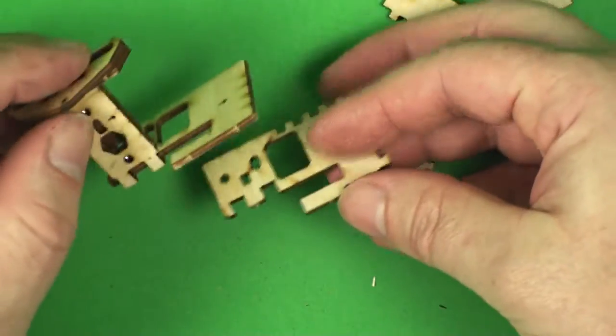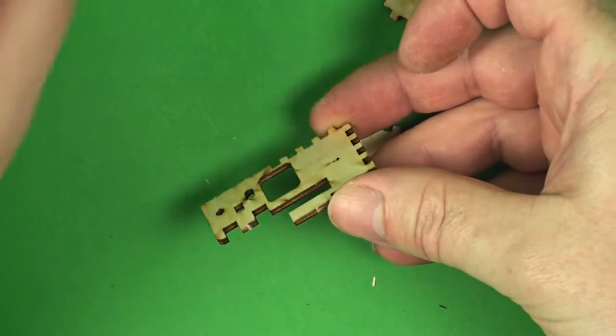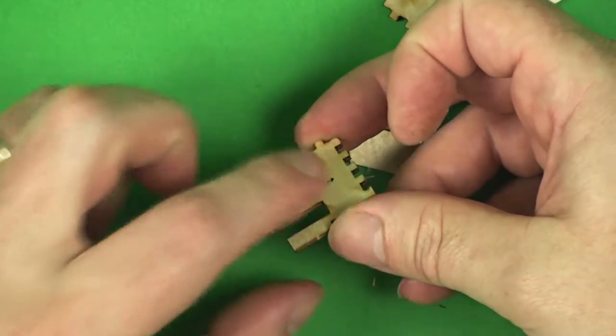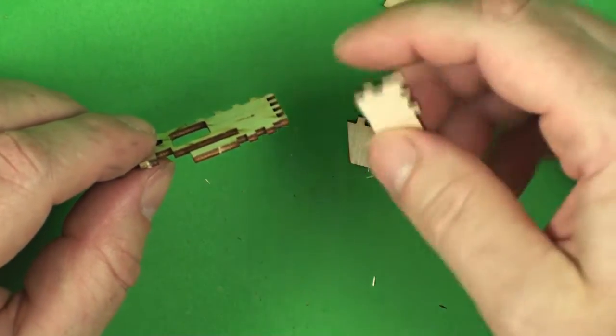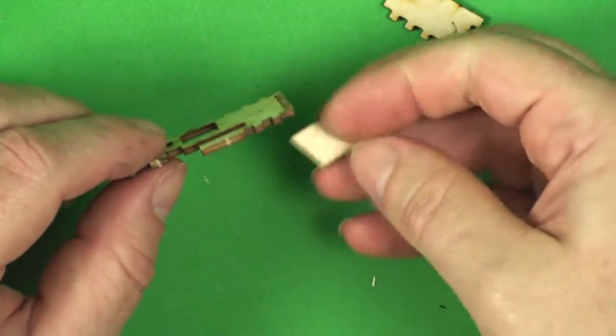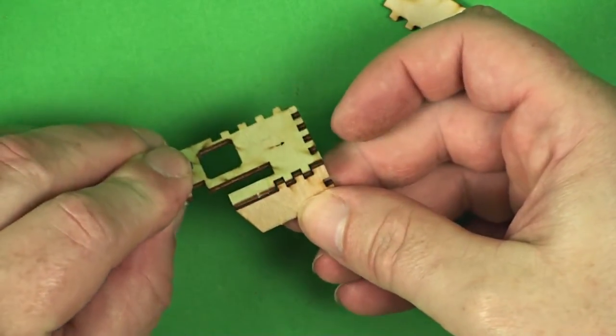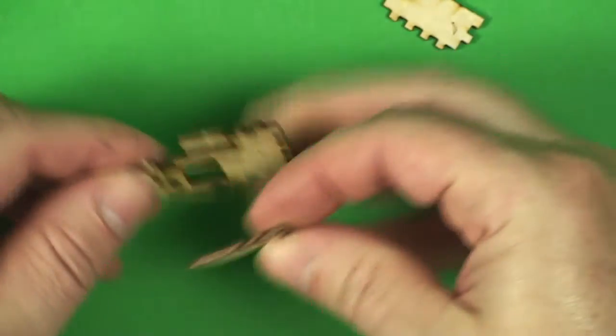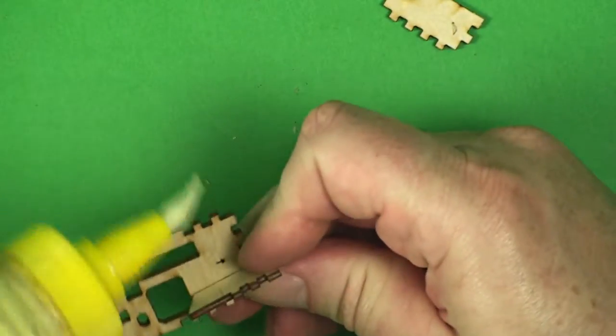Okay, let's make sure we get this the right way again, pointing to the right. So this is the top, and we'll glue this one on first that has just the three notches. It goes in here like that, so a little bit of glue on the bottom here.